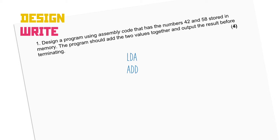The question tells us to output the answer once it's calculated, so this is the OUT instruction. It also mentions that it wants the program to terminate — that's our control mnemonic HLT to halt the program. Now once we've halted the program, that's a good point to put the data instructions in. As we're adding these values together it doesn't really matter what order, so I'll just put 42 here and 58 here.